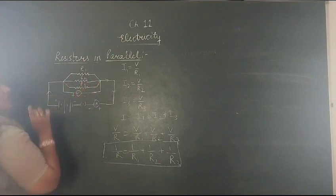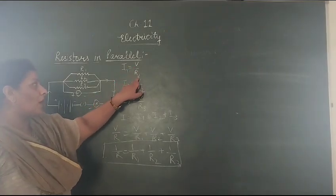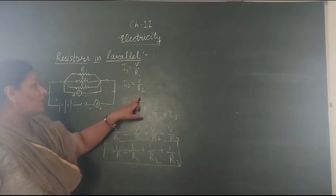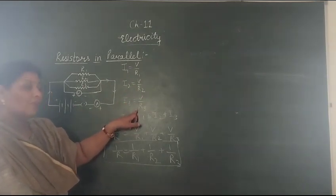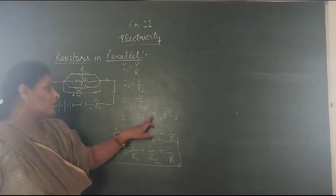But the potential difference will remain the same. So I1 equals V upon R1, I2 equals V upon R2, I3 equals V upon R3, and the total current passing through the circuit will be I1 plus I2 plus I3.